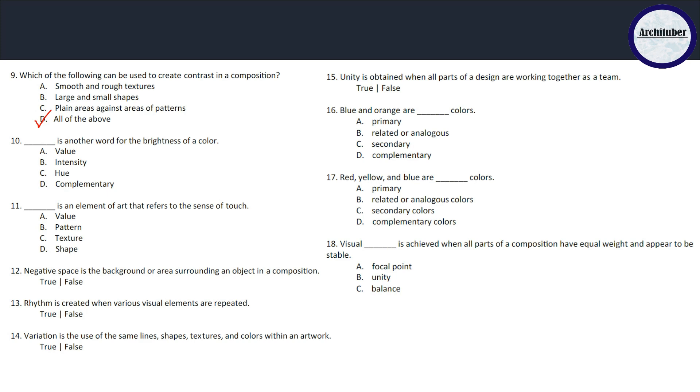Another word for brightness of color - is it value, intensity, hue, or complementary? It is intensity. An element of art that refers to the sense of touch - is it value, pattern, or shape? If you touch some material you can tell this is rock or cotton, fabric or brick - it depends on the texture of the particular material, so C is the correct answer.